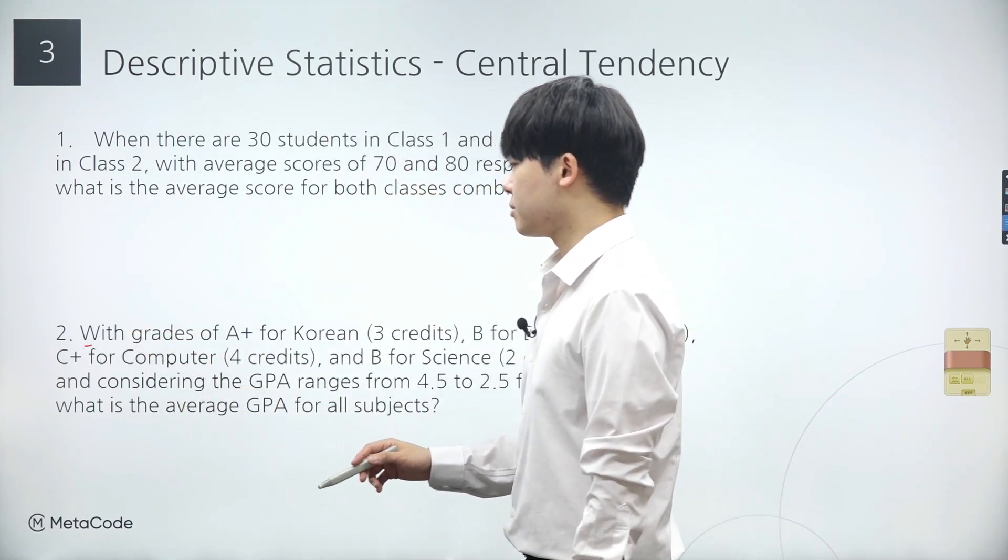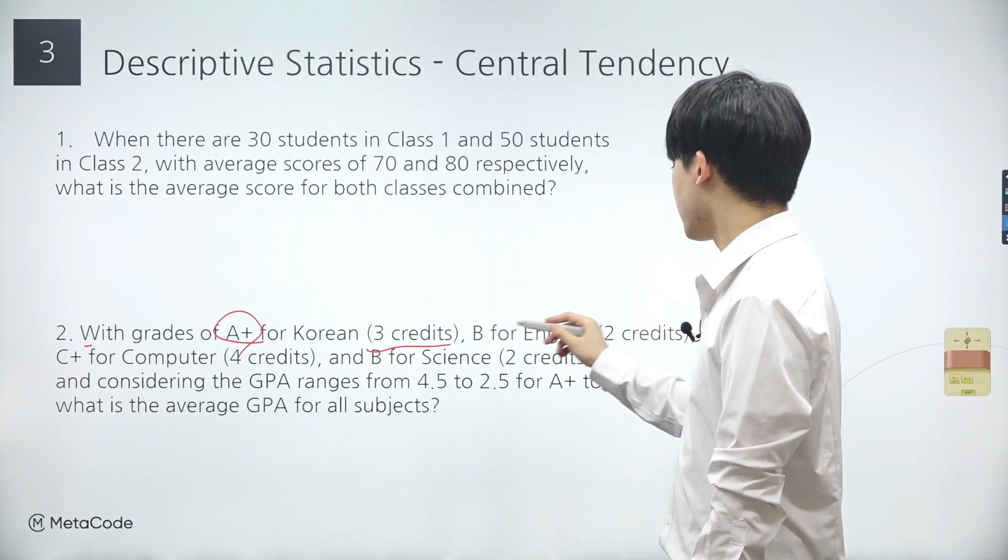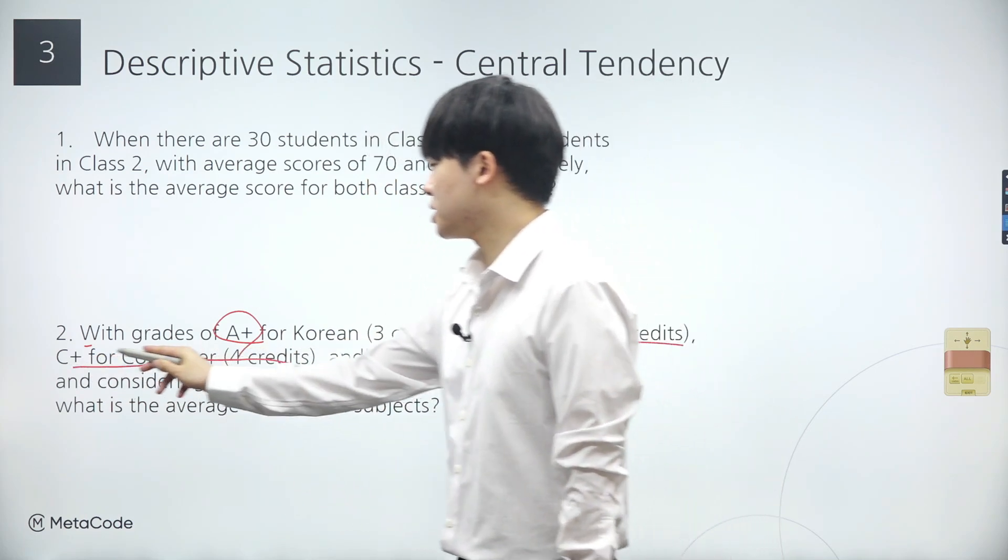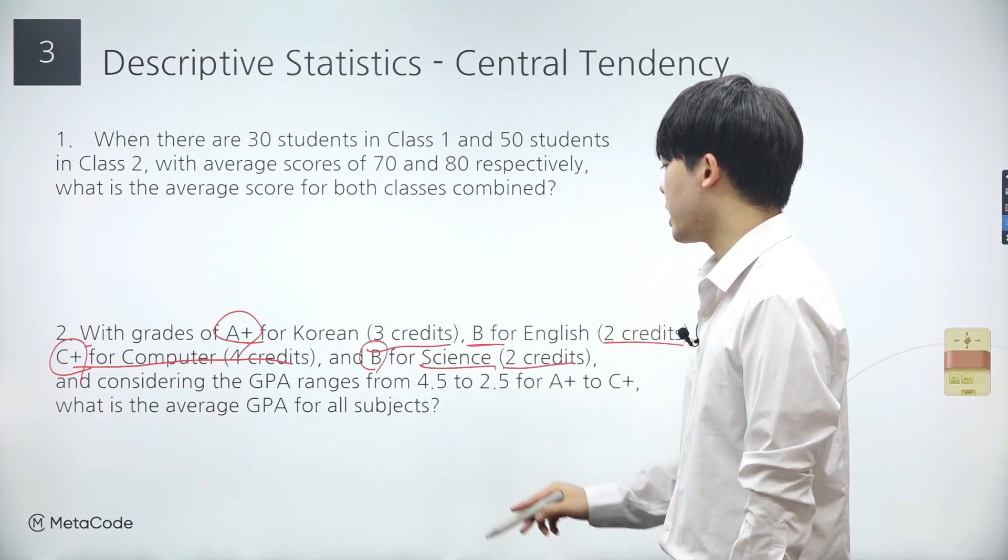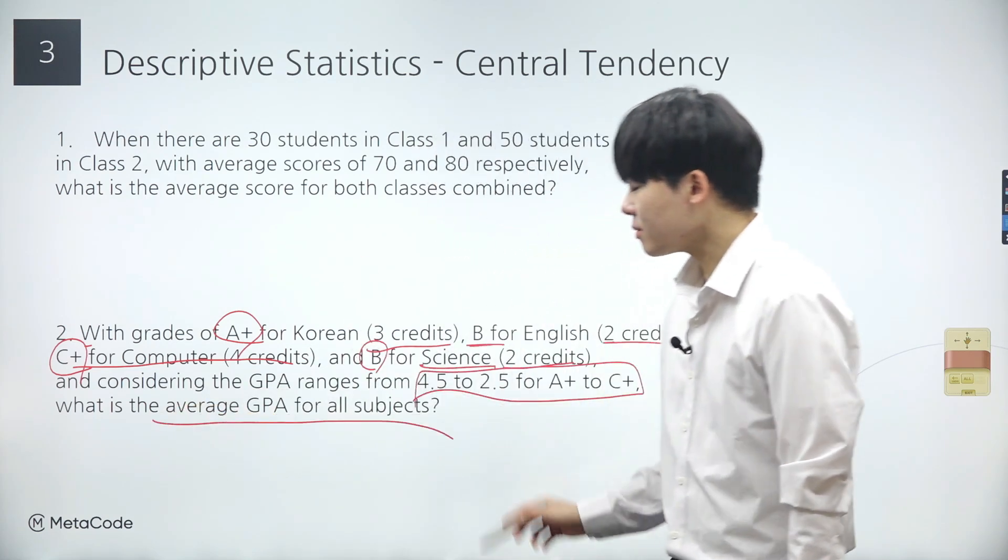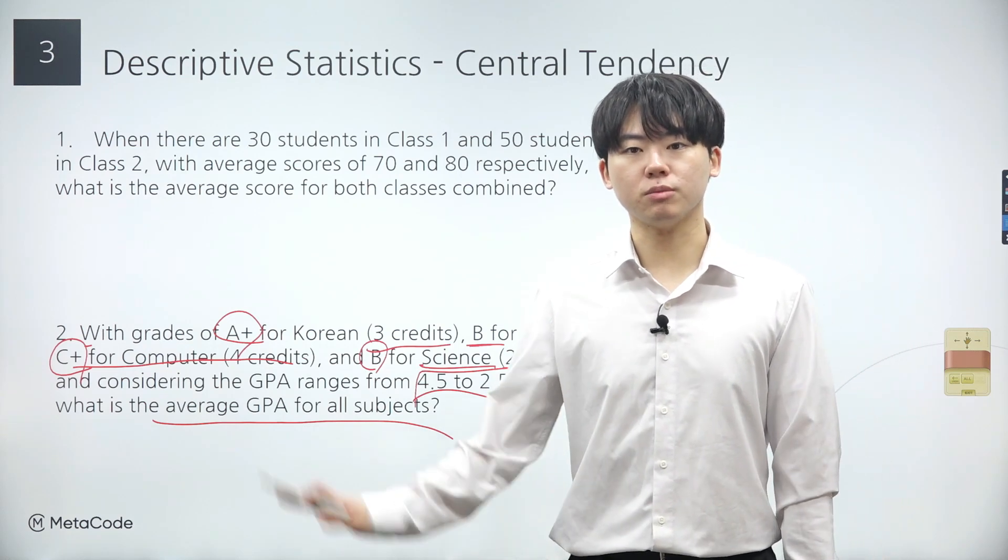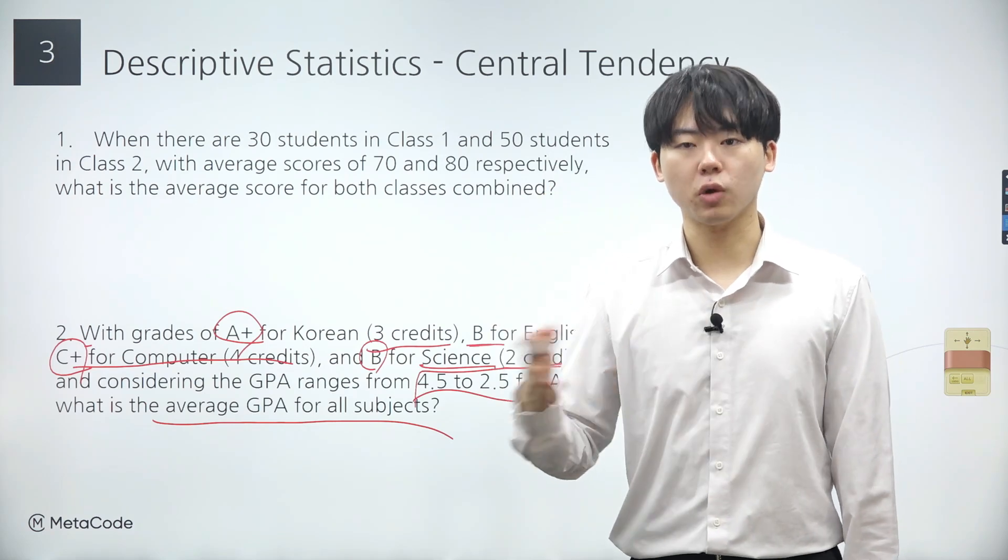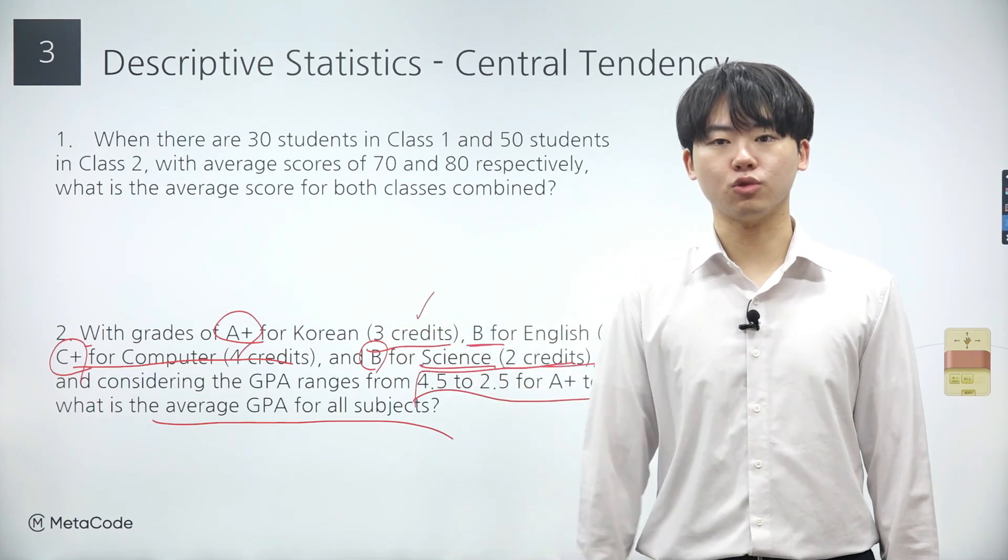Now, let's move on to problem 2. To solve this problem, we'll need to understand how to calculate the weighted mean, similar to the example with grades mentioned earlier. Let's say we received an A plus for Korean class, a B for English class, and unfortunately a C plus for computer class, and a B for science class. Each class corresponds to 3 credits, 2 credits, 4 credits, and lastly 2 credits respectively. Given that the GPA ranges from 4.5 to 2.5 for an A plus to C plus, what is the average GPA for all subjects? Since the credits vary for each class, calculating the weighted mean is the appropriate approach. Remember, for the weighted mean, we divide the sum of the products of weights and data by the sum of weights. What are the weights in this problem? In this problem, the weights are the credits representing the importance of each class.